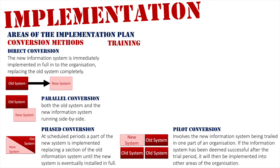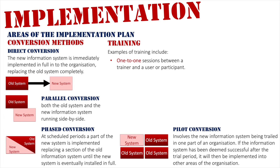Moving on to training methods — examples of training for users and participants could include one-to-one sessions between the trainer and a user, where they sit down face to face and go over the ins and outs of the new system. That trained person might then go and teach the rest of the staff. The alternative is team training, where the same trainer trains a whole group of people at once. This is harder and requires the group to be fairly savvy, since the trainer is only there for a limited time.